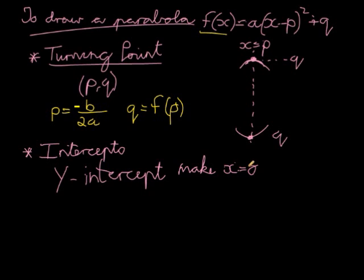That will give us the y-intercept. In the case where we have ax squared plus bx plus c, my x will be 0 and my y will be c.